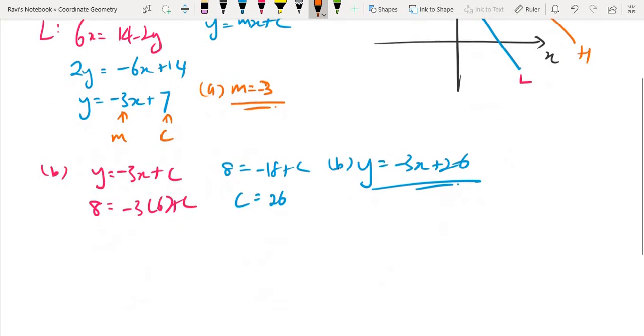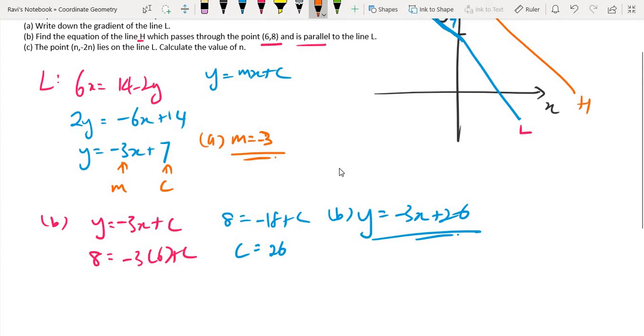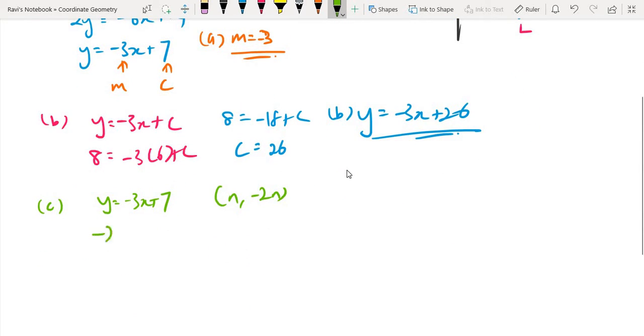And for part C, we are told that the point N and minus 2N lies on the line L. Calculate the value of N. So for equation L, we know this equation: y equals minus 3x plus 7. And the two points given are N and minus 2N. So all I need to do is substitute these points inside. Minus 2N equals minus 3N plus 7. N equals 7.